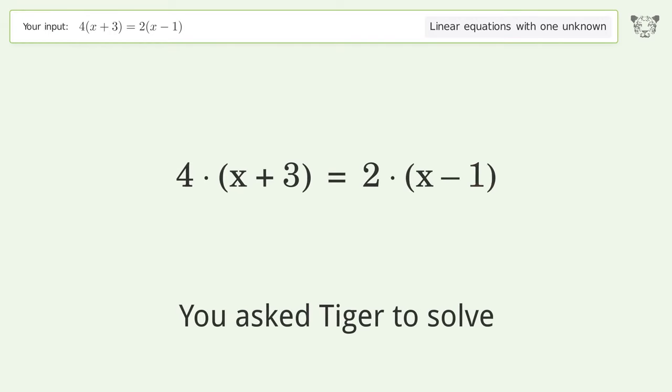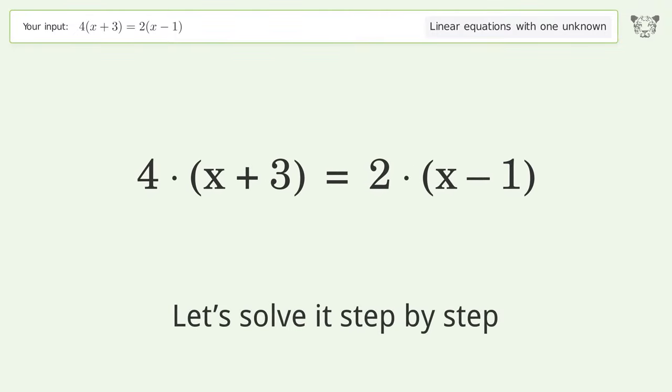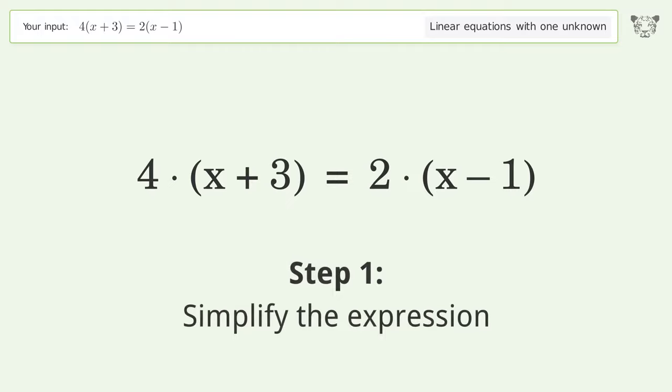You asked Tiger to solve this. This deals with linear equations with one unknown. The final result is x equals negative 7. Let's solve it step by step. Simplify the expression.